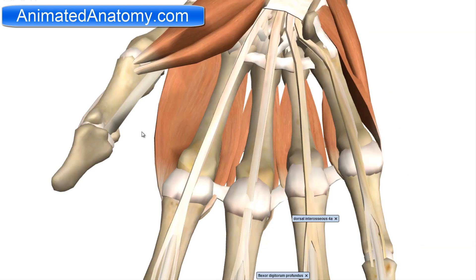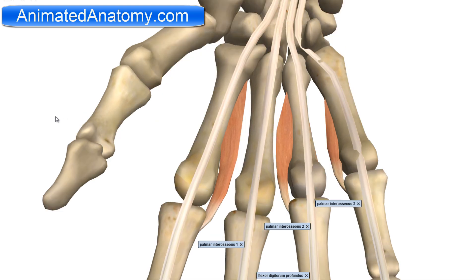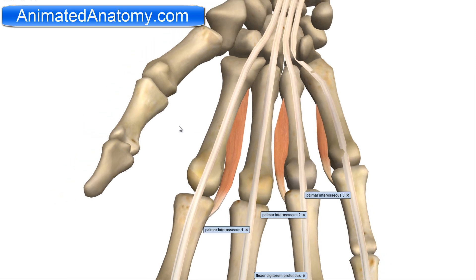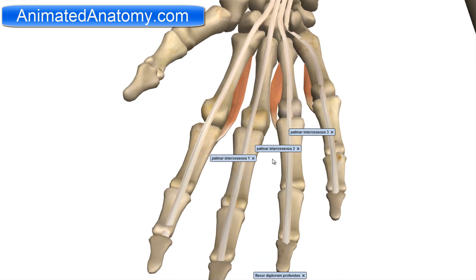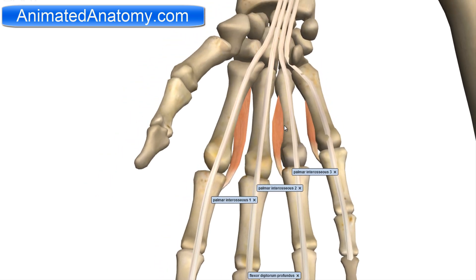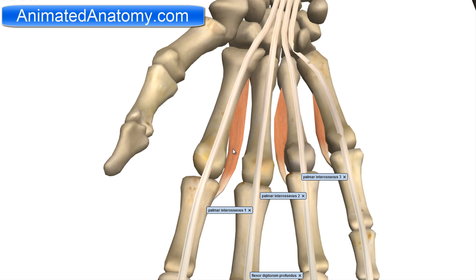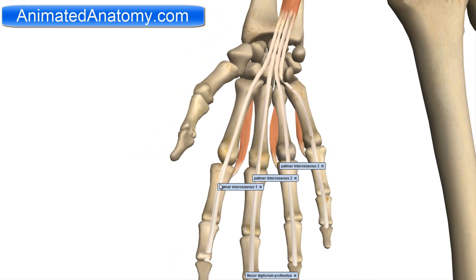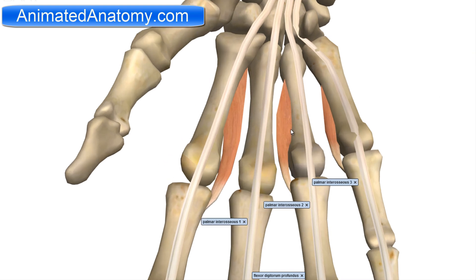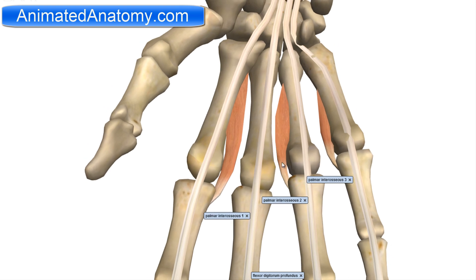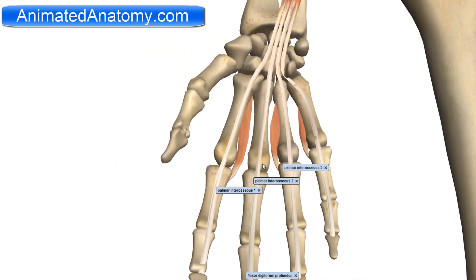Now let's look at the palmar interossei muscles. Here is one palmar interossei muscle, here is another, and another one. These muscles serve for the adduction of the fingers. They have their origin on the metacarpal bones and they insert on the proximal phalanges. When this muscle contracts, you can see the way the fibers go — it's going to pull the index finger towards the middle finger. The other two will pull those fingers laterally towards the middle finger as well. That is why this group serves for the adduction of the fingers.